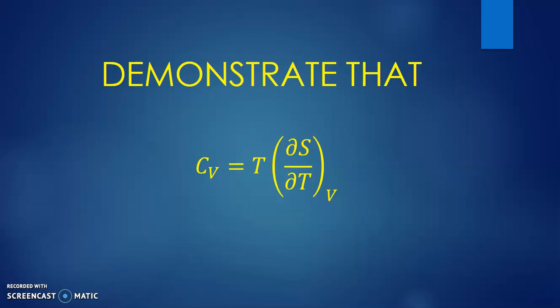Hello everyone, in this video we will demonstrate that Cv is equal to T times the derivative of the entropy with respect to the temperature at constant volume, so let's get started.